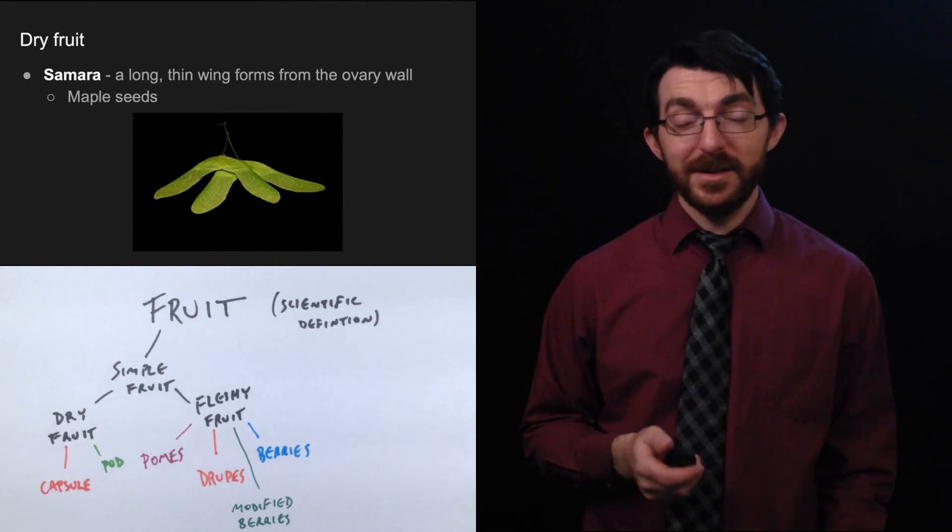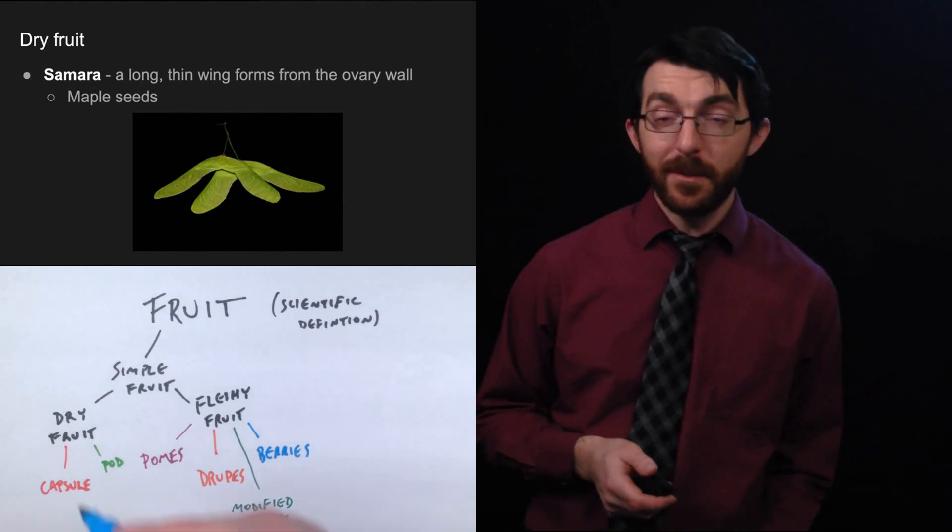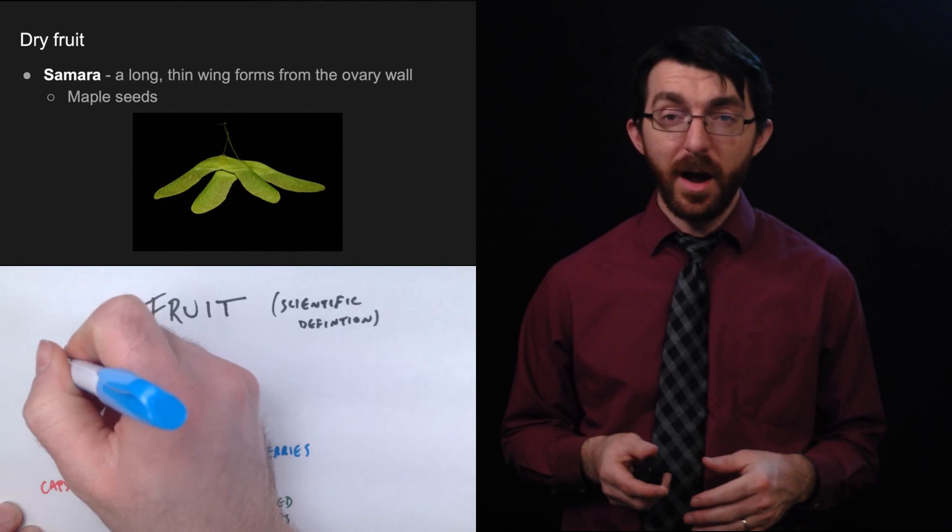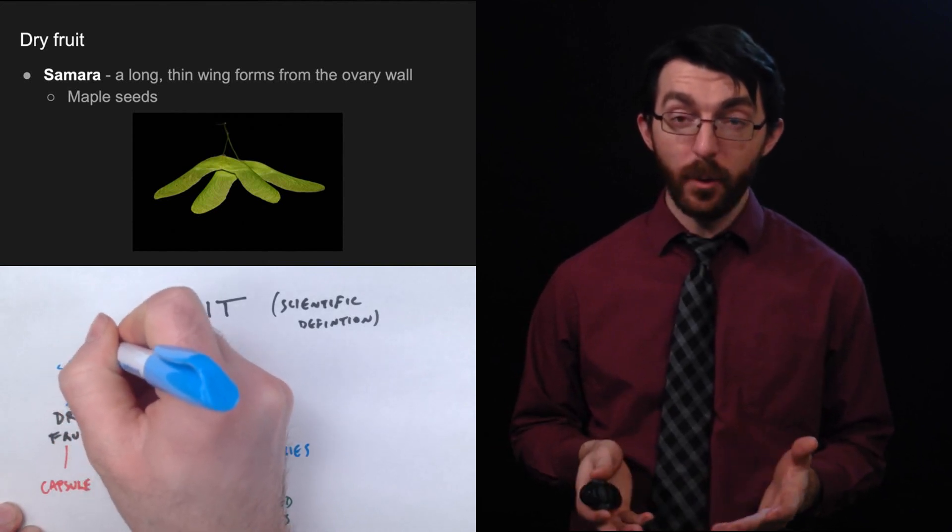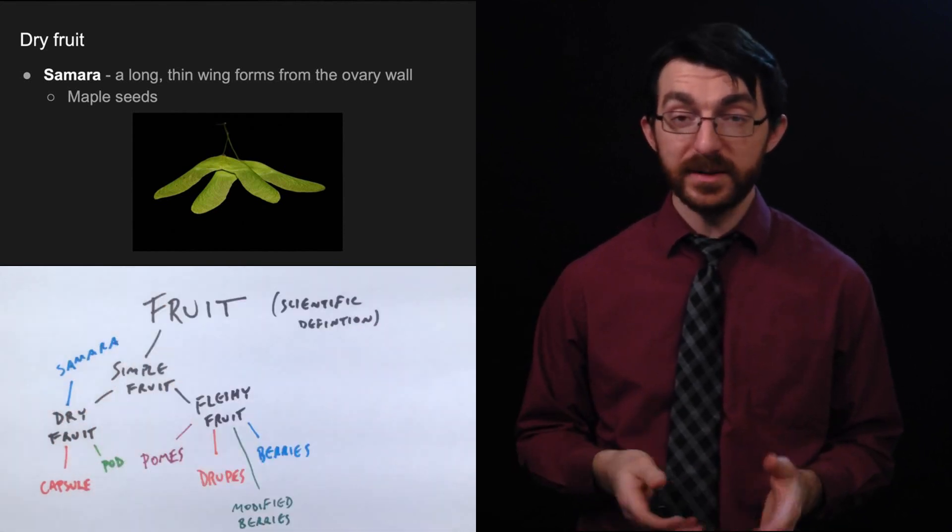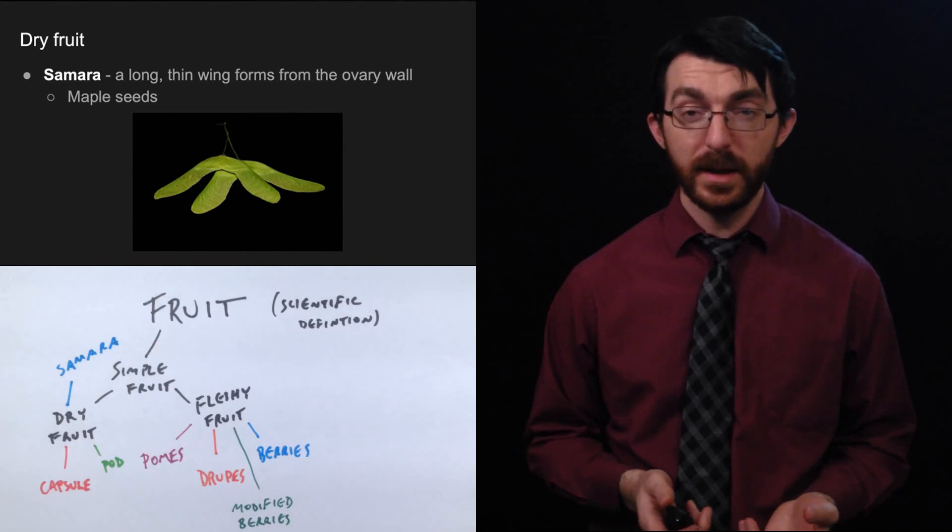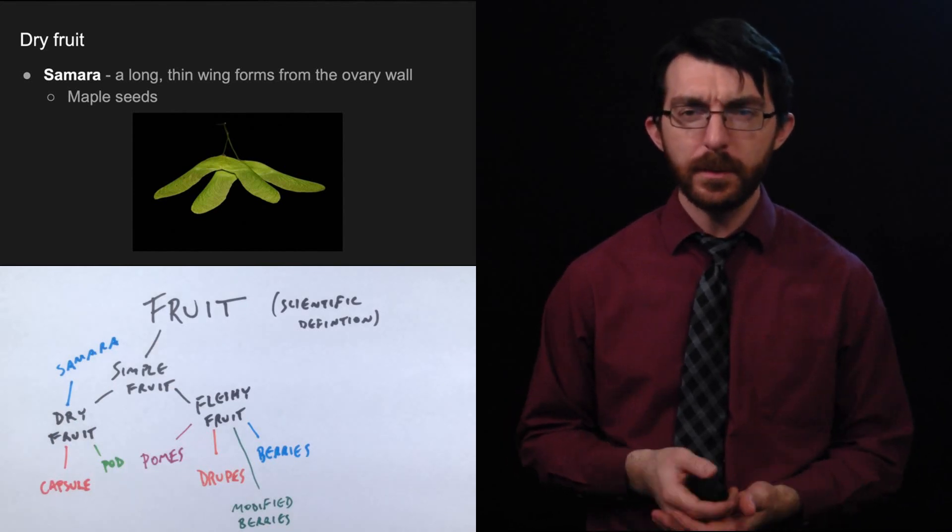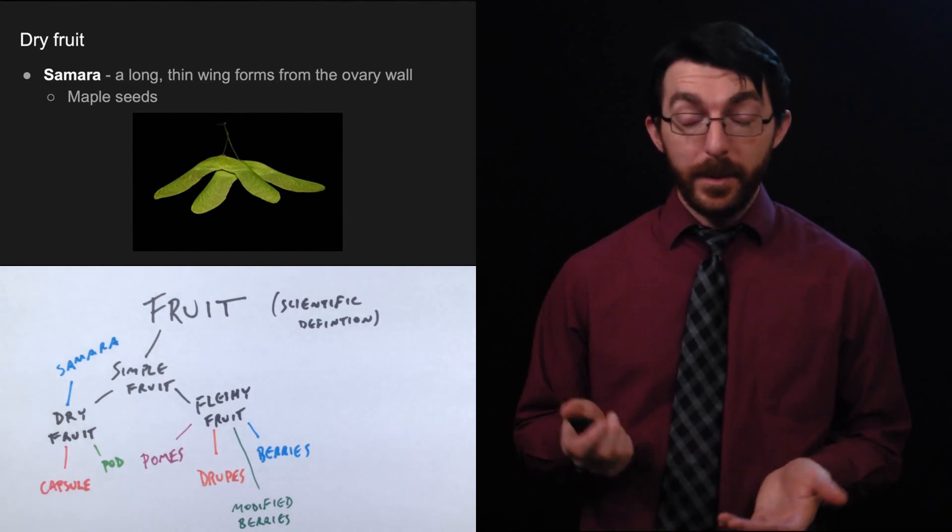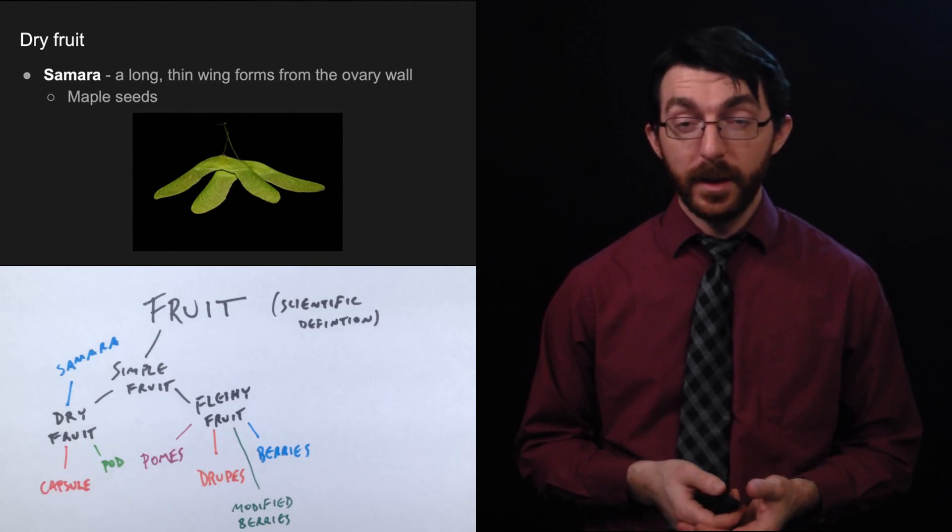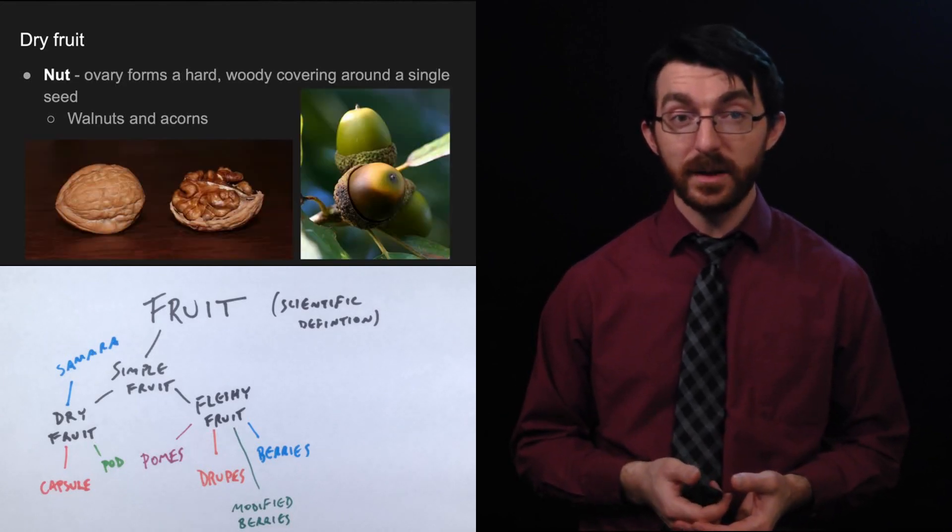All right. So next up, you didn't think this was fruit, did you? This is called a samara. These are when a long thin wing forms from the ovary wall. And a good example of that would be maple seeds, right? So you're all familiar with those. You've seen maple seeds before. I mean, you know, it's technically fruit, but I don't want to eat one.